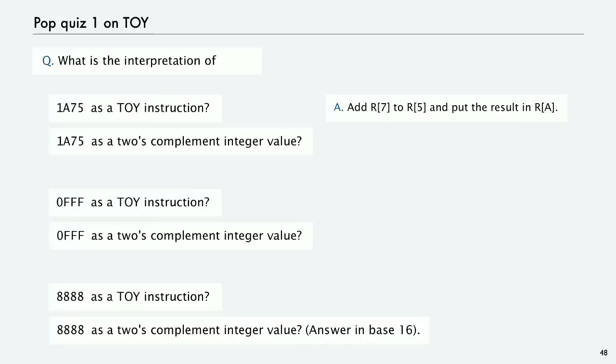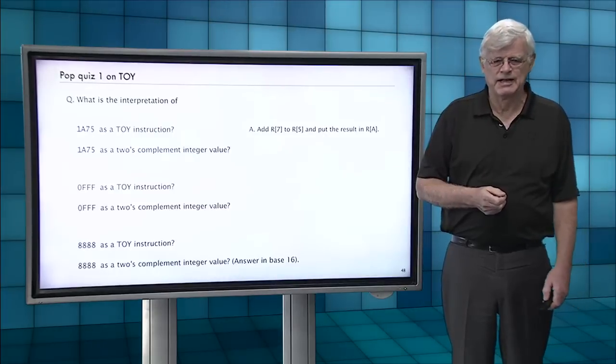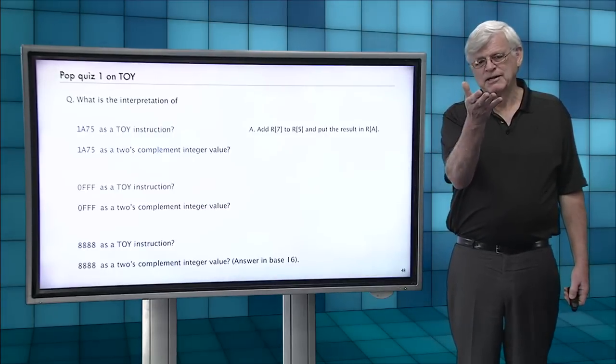So, well, 1A75, that's easy. 1 is an add instruction. A is the result. We're going to add register 7 and 5, put the result in A. 2's complement integer value. Well, it's a 1. It's positive. So we can use hex to do it. It's 1 times 16 cubed plus 10 times 16 squared plus 7 times 16 plus 5.